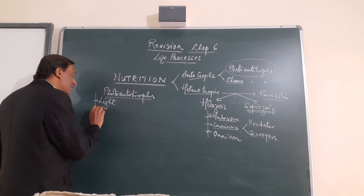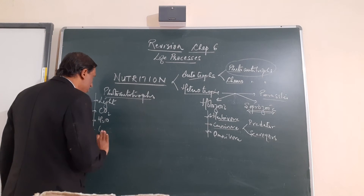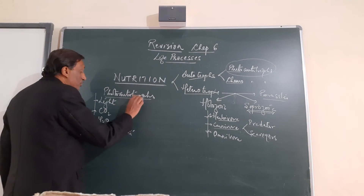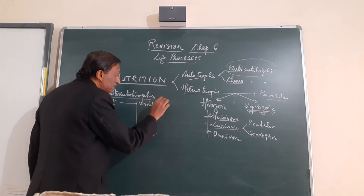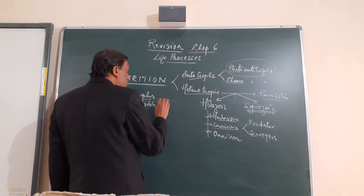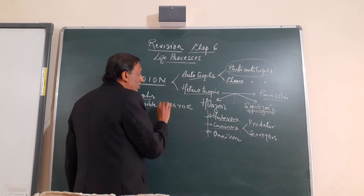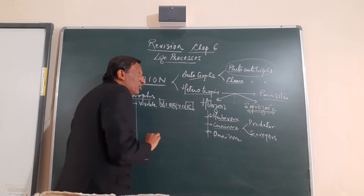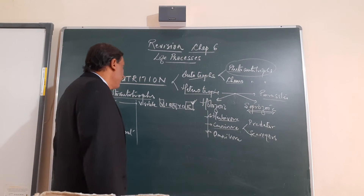Photo-autotrophs require four different things: light, carbon dioxide, water, and chloroplasts. Light can be any visible light — visible light ranges from violet to red (VIBGYOR). Maximum photosynthesis occurs at the two ends of the visible spectrum and minimum in the middle. But all visible light is used in photosynthesis, and maximum is used in red light.